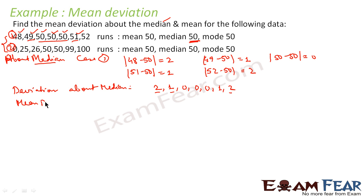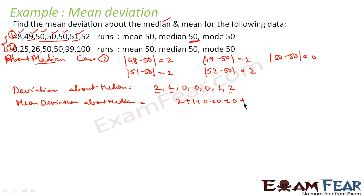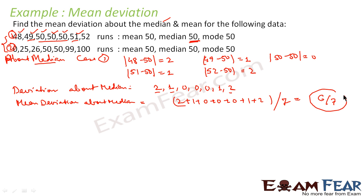Now we find the mean of these deviations. Mean deviation about median equals the sum divided by number of values: 2 plus 1 plus 0 plus 0 plus 0 plus 1 plus 2, divided by 7. That is 6 divided by 7. So the mean deviation about median for Case 1 is 6/7.